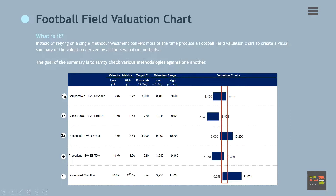The x-axis, or horizontal axis, features the unit used for measuring value. For public companies, the unit used is the share price. For private companies, the unit used is enterprise value, or EV. In this chart here, we are using the enterprise value.